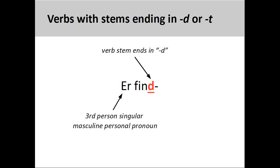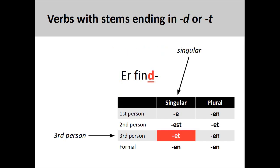Here, the subject is the third-person singular masculine personal pronoun 'er', 'he'. We then need to find the correct third-person singular verb ending on the chart. Here, the appropriate ending '-et' is marked in red.